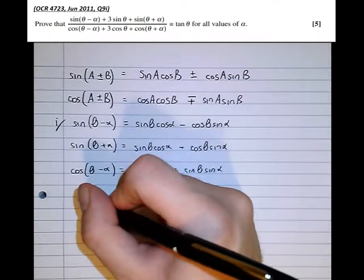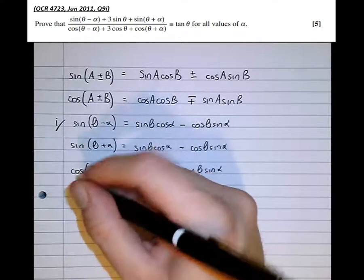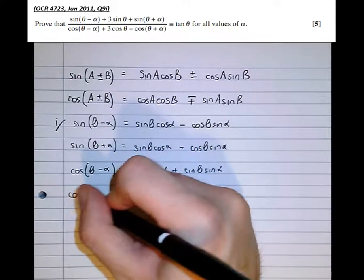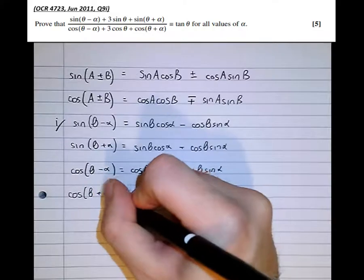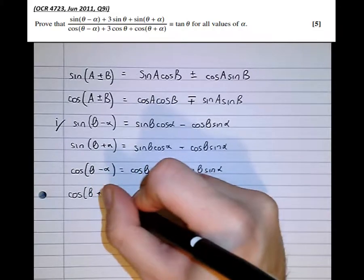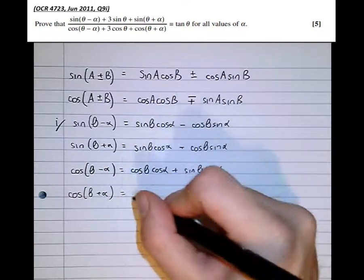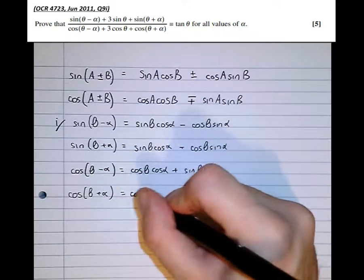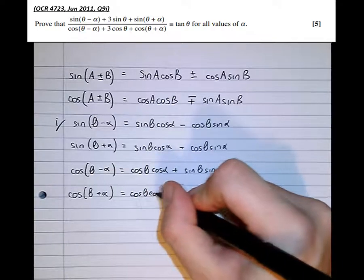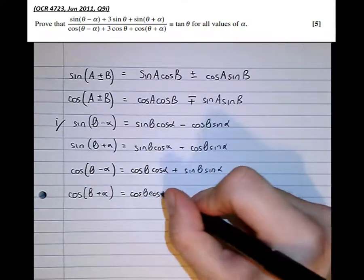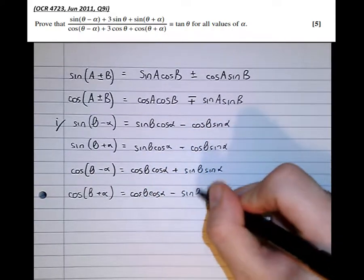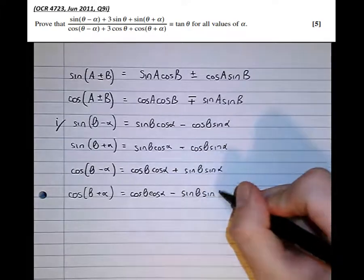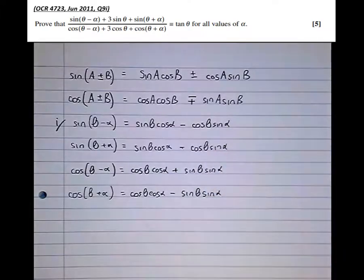And then for the final one, cos of theta plus alpha, we end up with cos theta cos alpha, minus sine theta sine alpha.